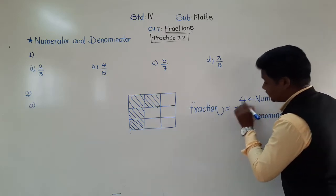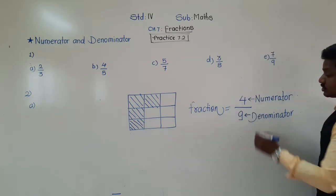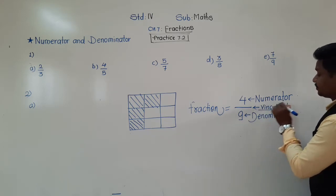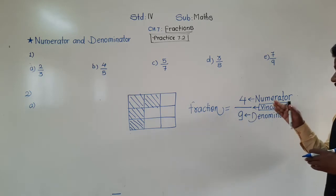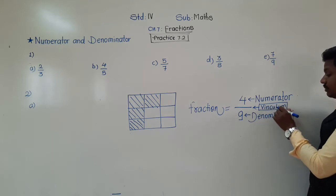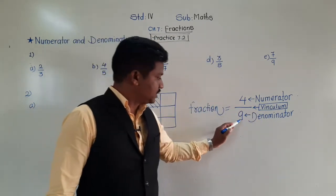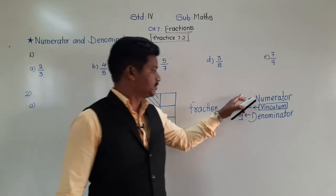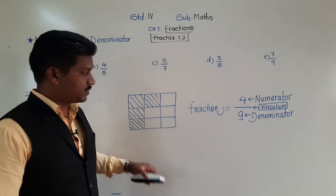Also, see this bar between the numerator and denominator — it is called vinculum, V-I-N-C-U-L-U-M. It is also called the division bar, but its name is vinculum. So, to summarize: the number above the bar is the numerator, the number below the bar is the denominator, and the bar between them is called vinculum. Pause this video and write this in your notebook.